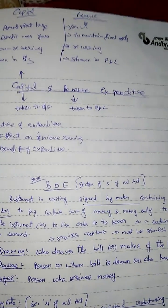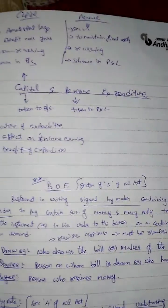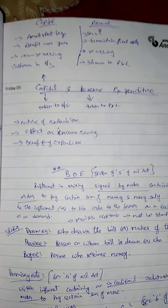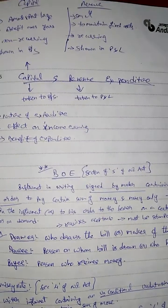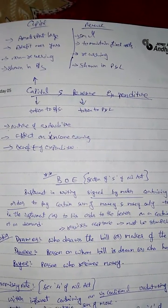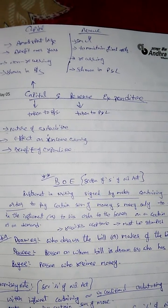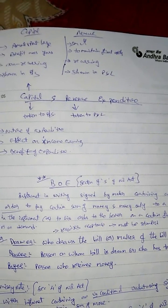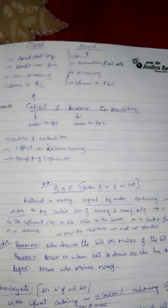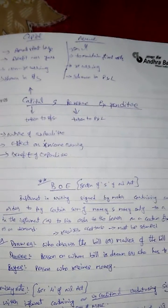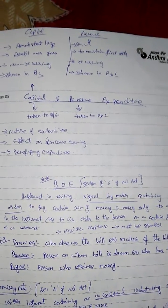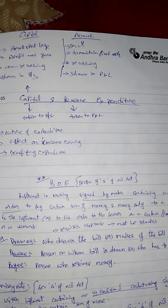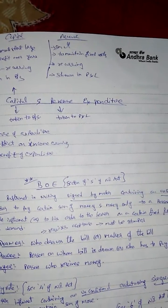The basic thing is that expenditure involved in the creation of a fixed asset is capital expenditure, and normally the amount spent on capital expenditure will be large. Take an example: the amount spent in purchase of machinery is capital expenditure, and the amount spent in construction of a building is capital expenditure.